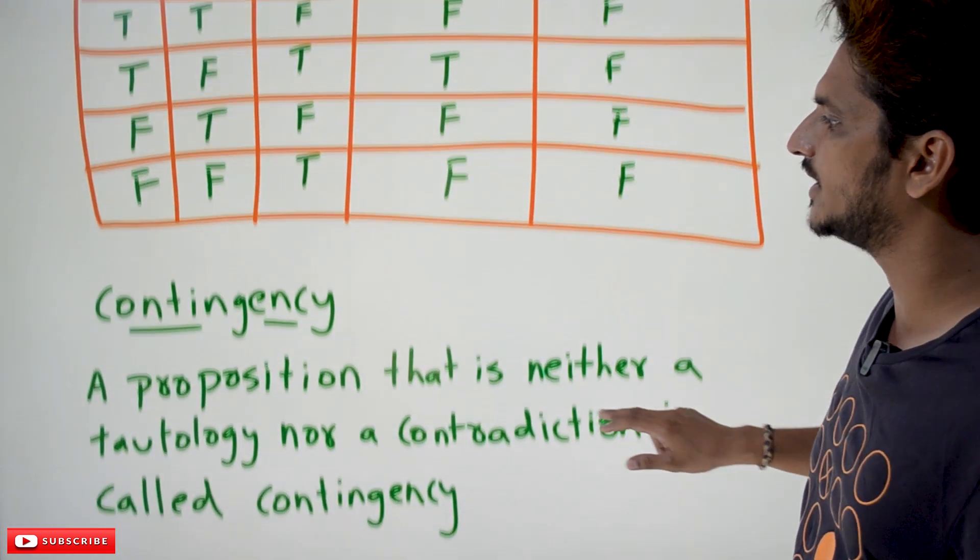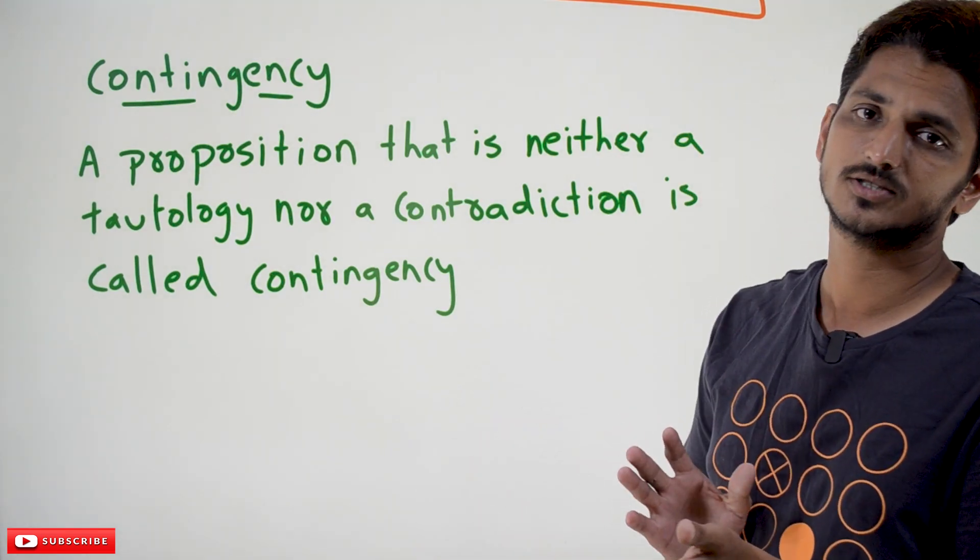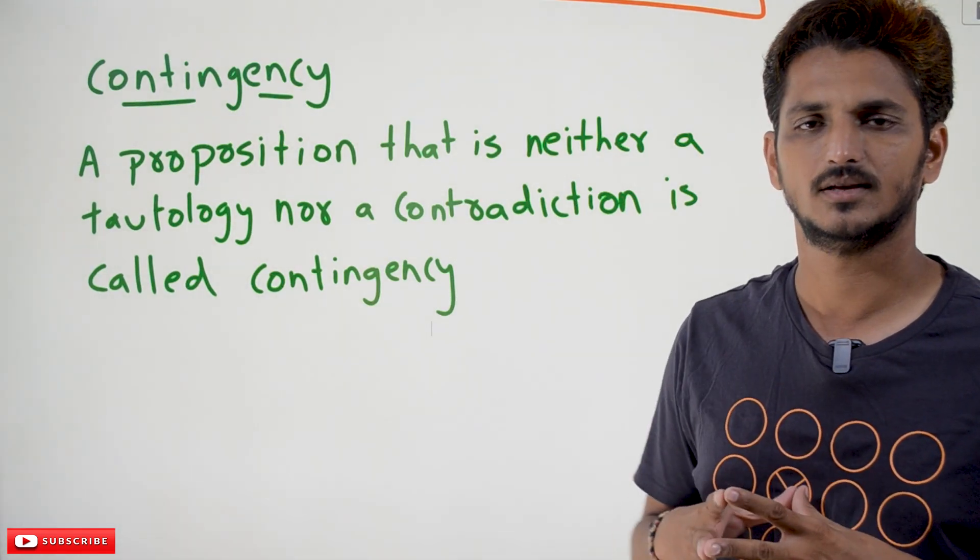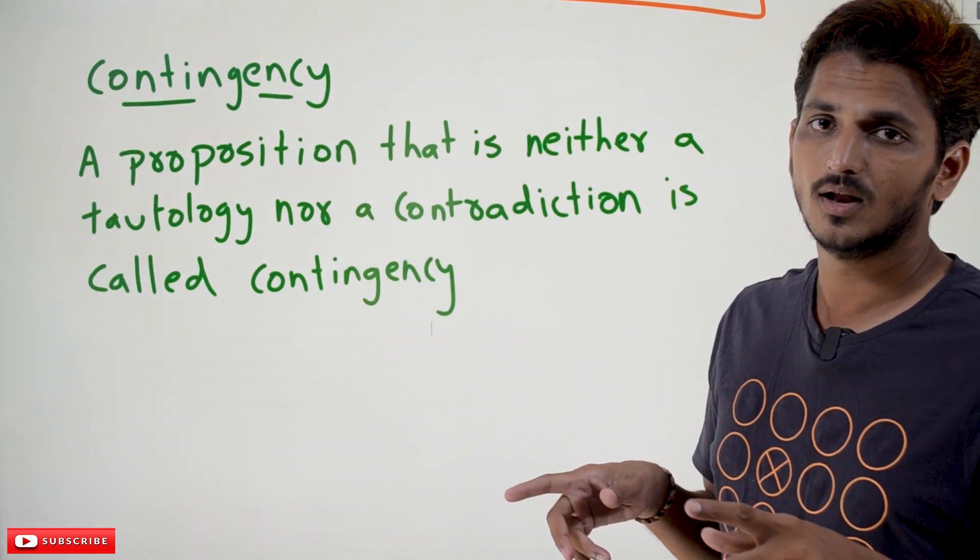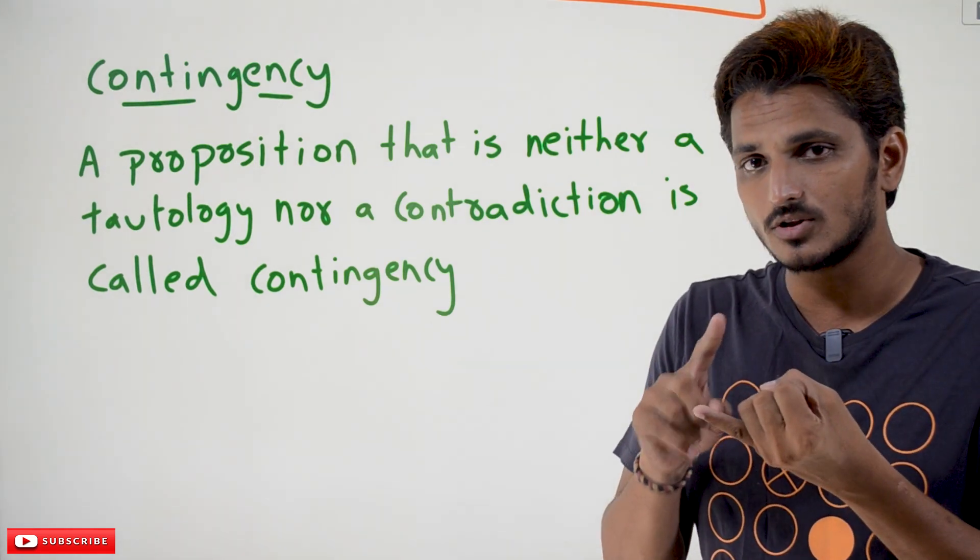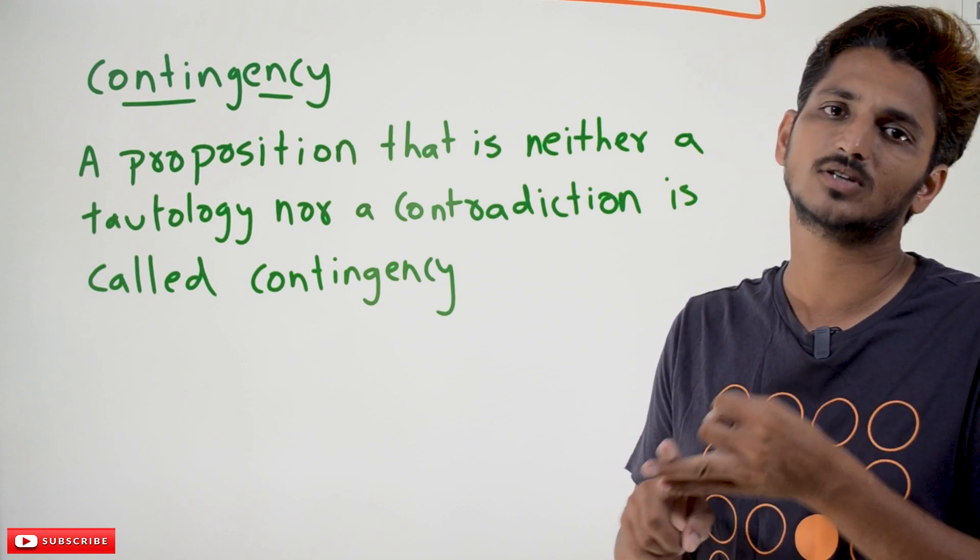Now coming to the next one: contingency. A proposition that is neither tautology nor contradiction, we call it contingency. Means in our proposition, in our truth table, you should have at least one true value and one false value. Then we say it is contingency.